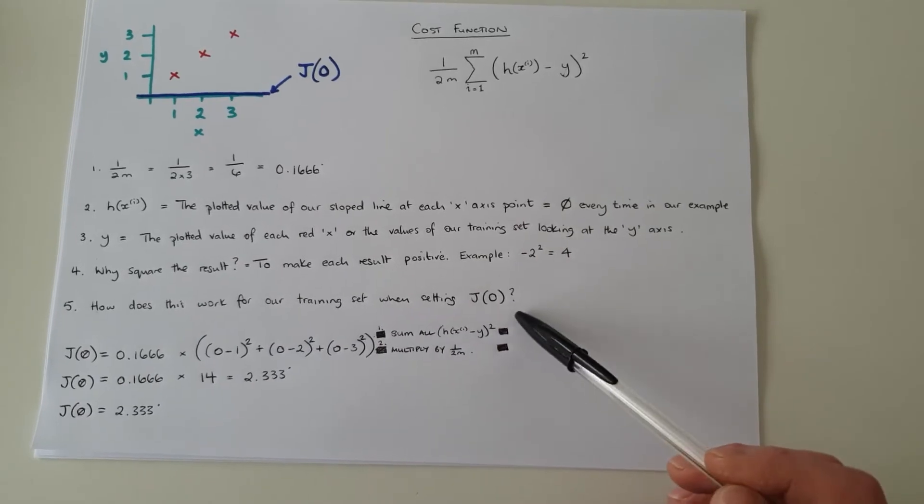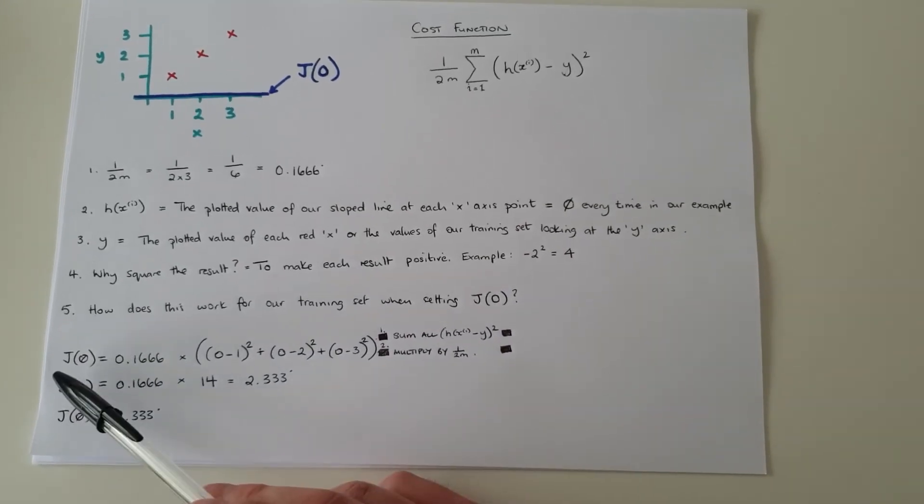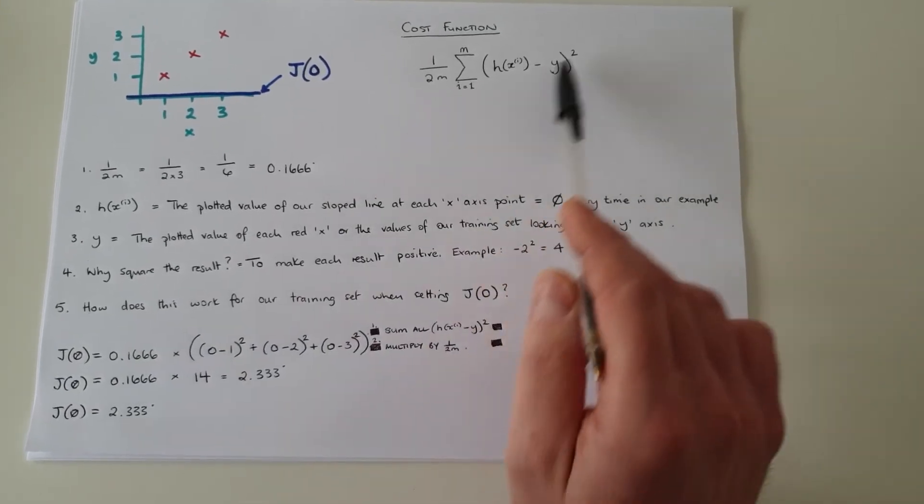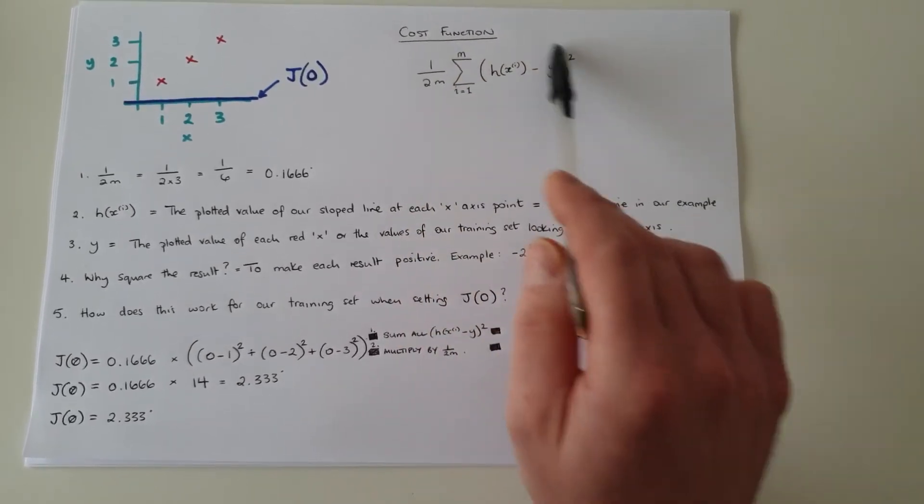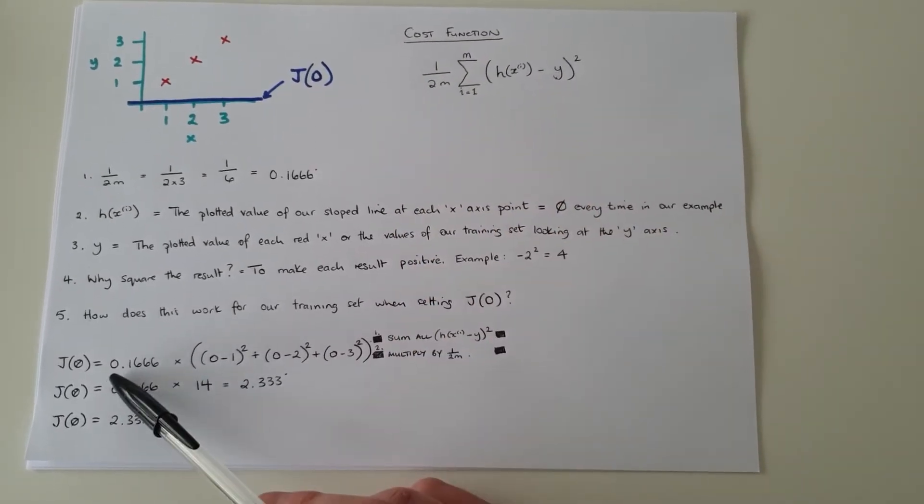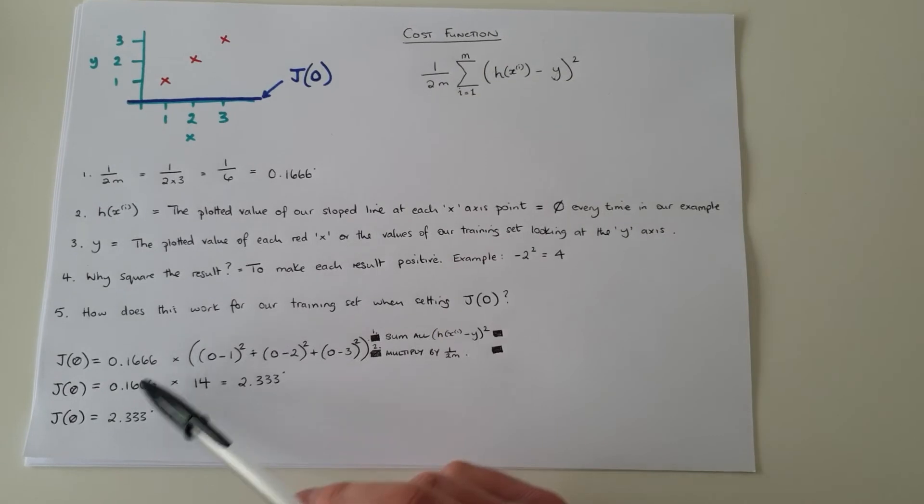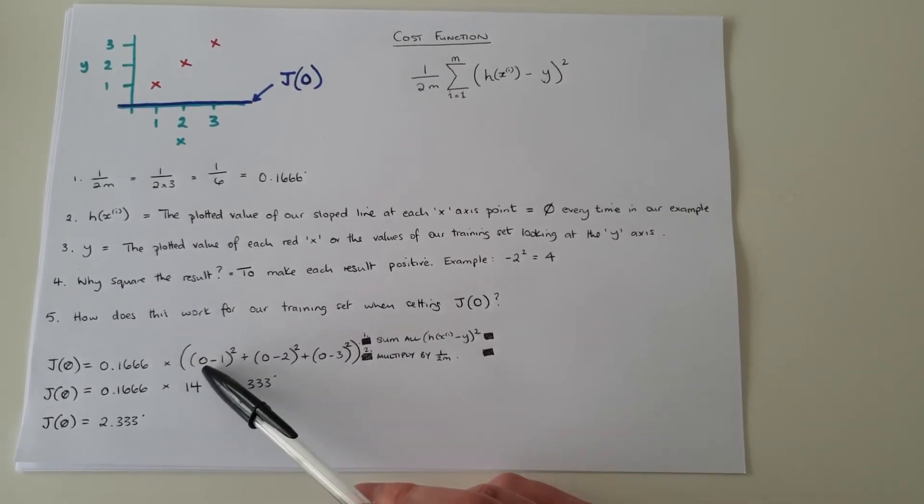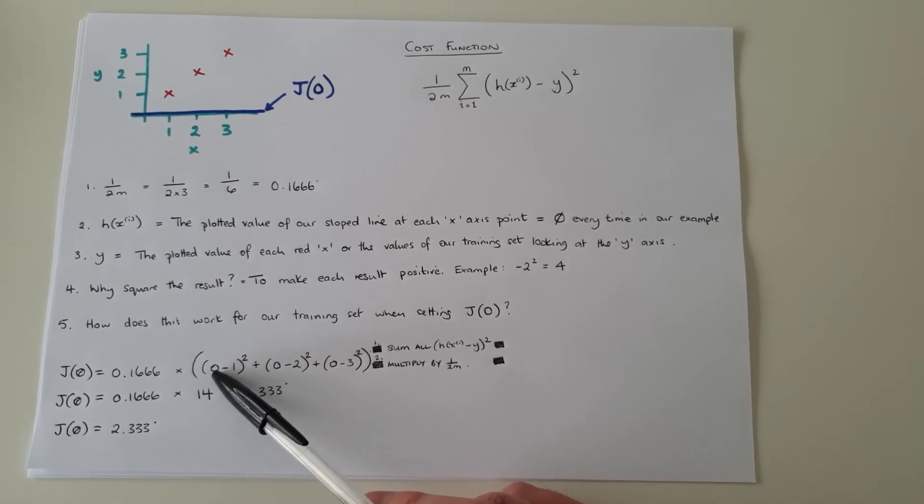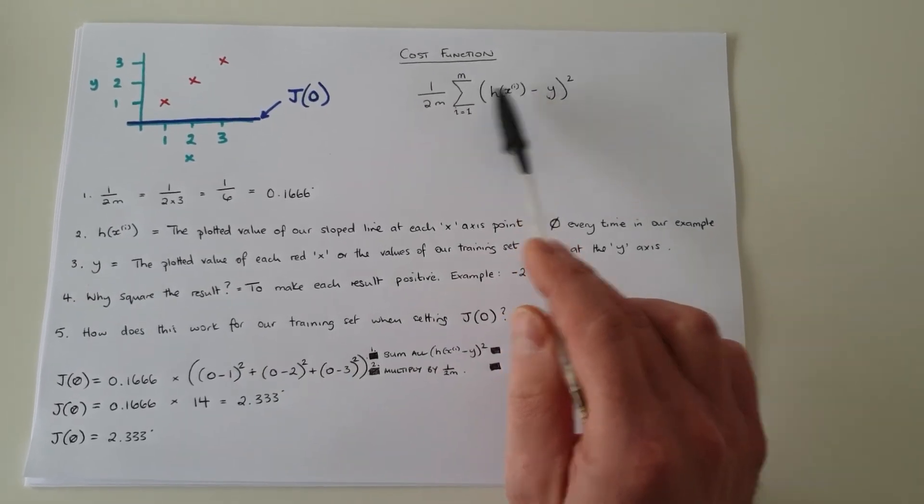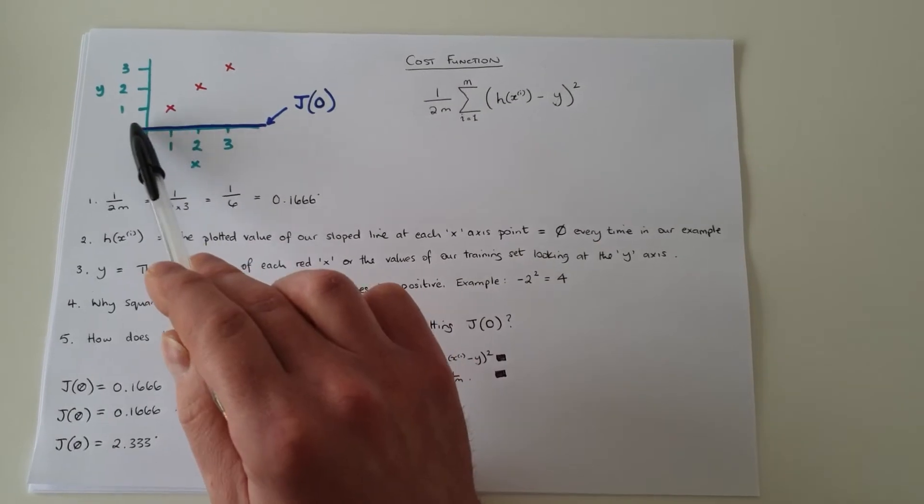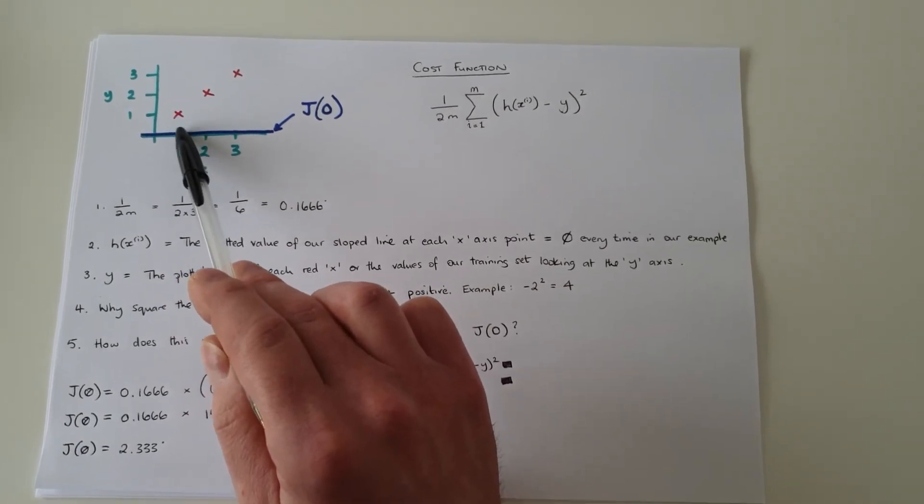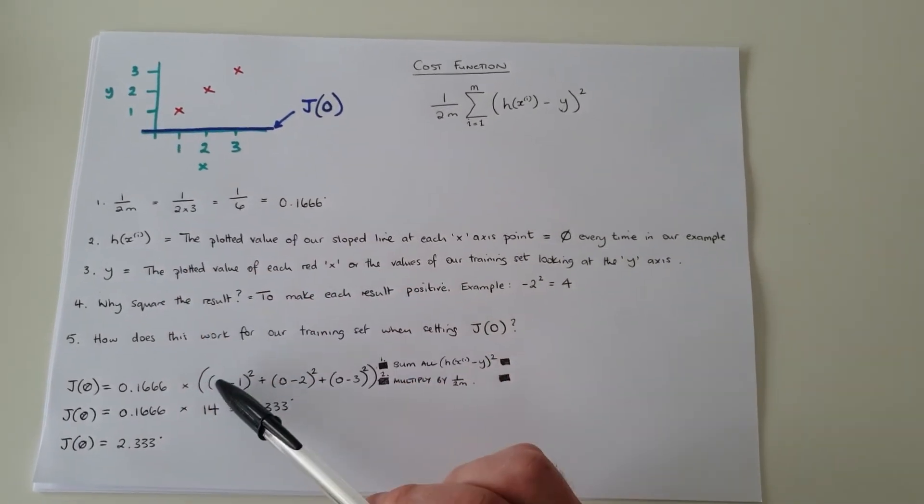So how did this work out for the question? So let's substitute out some of the values in this cost function. So we know that one over two m equals zero point one six six six. I'm going to times that by zero minus one. Where do we get the zero from? From the h of x at point one. So our slope is at zero there, the dark blue line, which means zero.